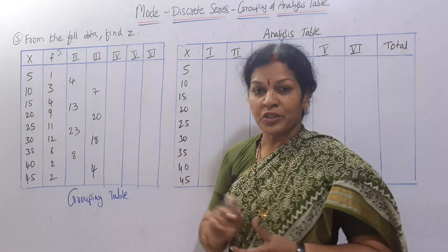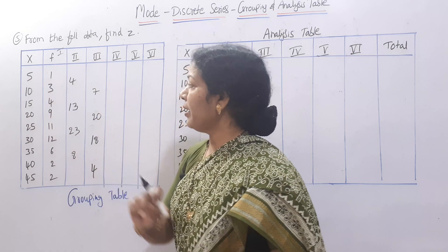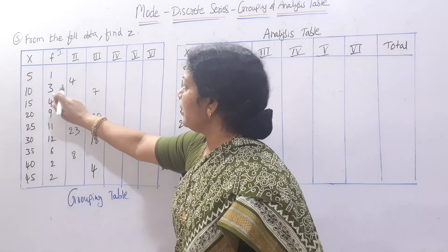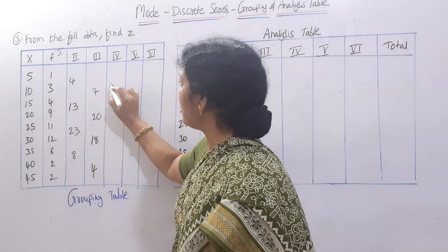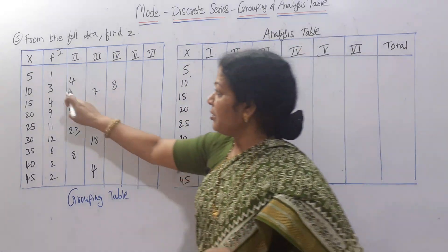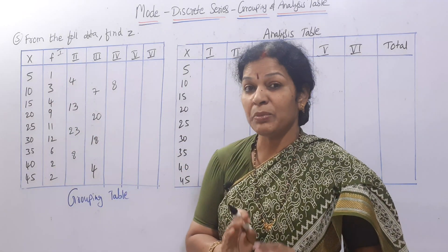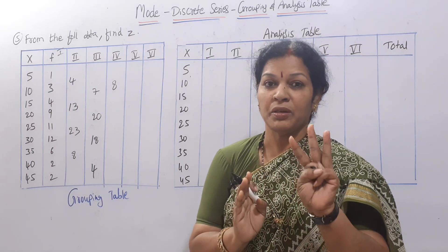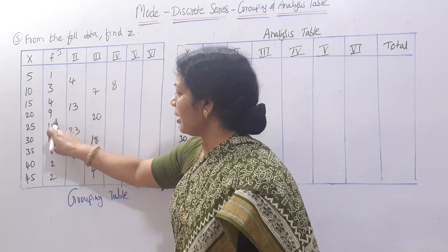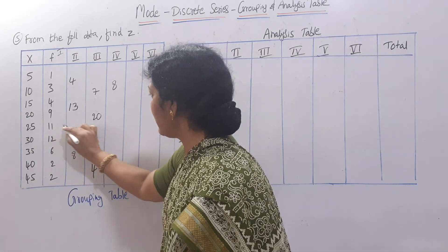For column 4, we add three-by-three: 1 plus 3 plus 4 gives 8, written opposite the center number 3. Next group: 9 plus 11 plus 12 gives 32, written opposite the center number 11. We write 32 opposite to 11 because 11 is the center of those three numbers.